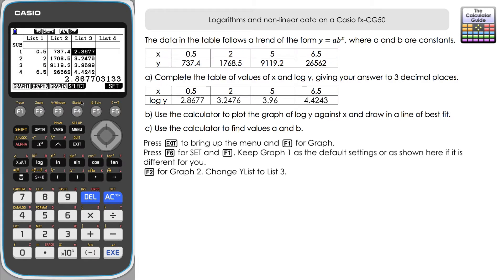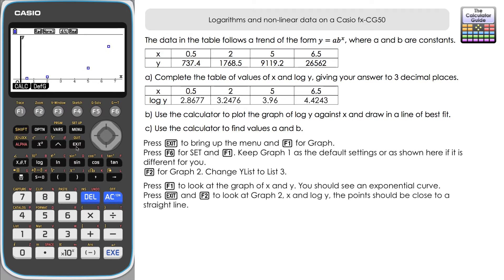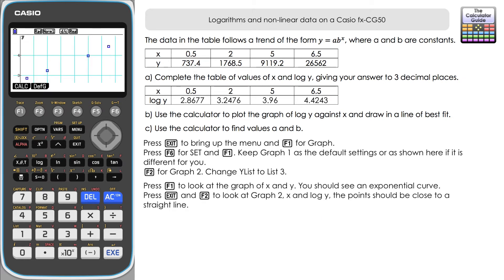Let's look at graph one first — the graph of X against Y. Although there are only four plot points, you can see the exponential curve taking shape. Now looking at graph two, where we've plotted X against log Y, you can see we now have almost a straight line — we've transformed it into a linear relationship between X and log Y.